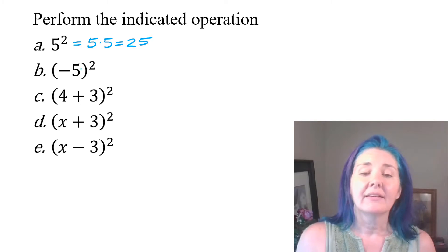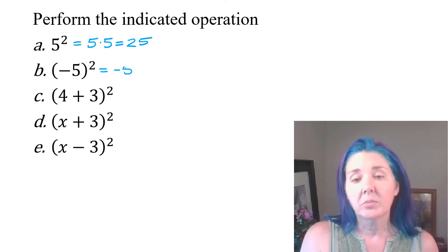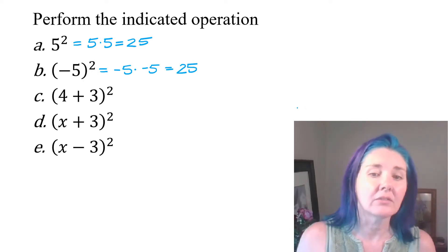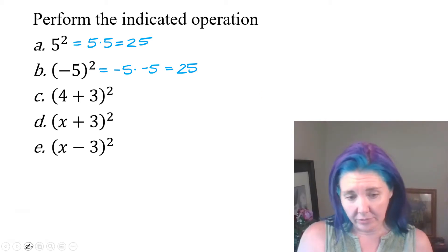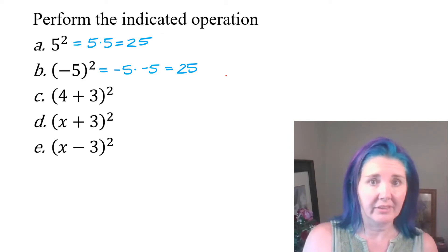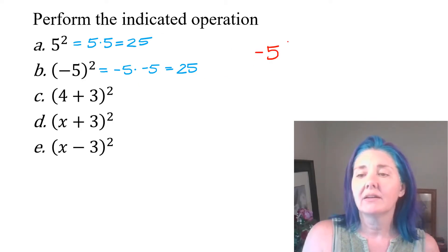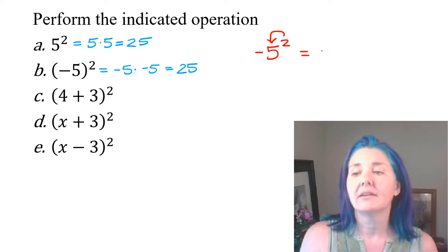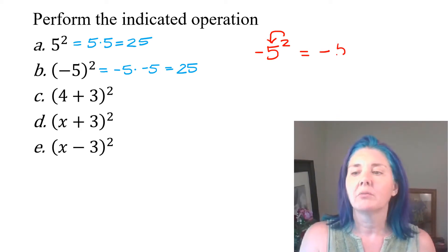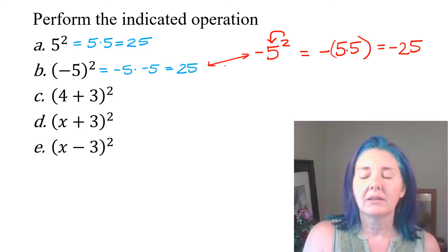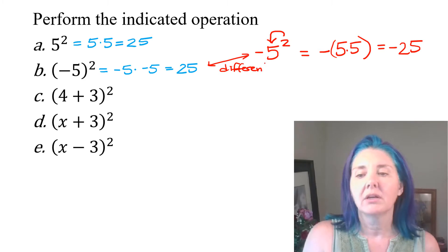Interestingly, raising negative five to the second power means multiplying negative five times negative five, which also equals 25 because a negative times a negative is a positive. Now you do have to be careful here. There is a big difference between negative five being in parentheses and not being in parentheses. If it said negative five squared, that's telling you that only the five is being raised to the second power, so that negative just tags along, and we're multiplying five times five, giving negative 25. So be aware of that difference to avoid making an error.